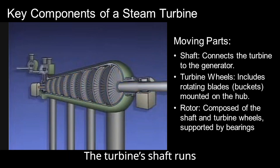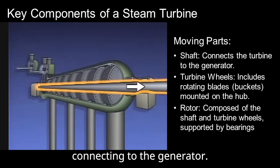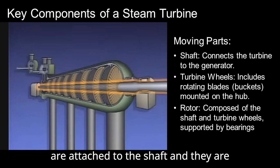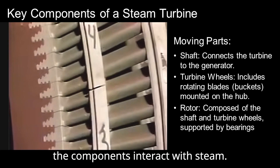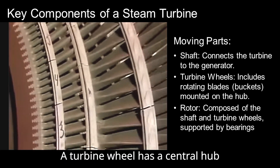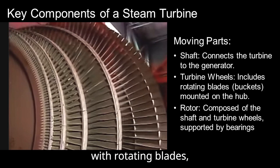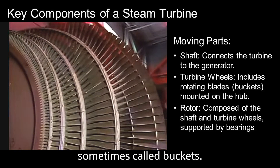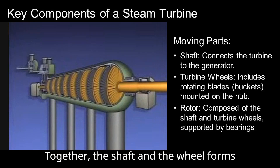The turbine's shaft runs the length of the turbine, connecting to the generator. The turbine wheels are attached to the shaft, and they are the components that interact with steam. A turbine wheel has a central hub with rotating blades, sometimes called buckets. Together, the shaft and the wheel form the rotor.